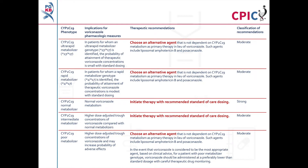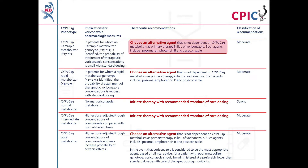These are the CPIC dosing recommendations for voriconazole. Patients with a CYP2C19 ultra-rapid metaboliser phenotype will have a low probability of reaching therapeutic voriconazole concentrations with standard dosing. An alternative agent that is not dependent on metabolism by CYP2C19 should be chosen for these patients. This is a moderate recommendation.